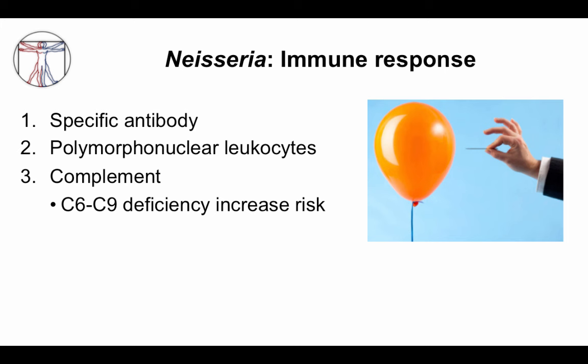The terminal complement pathway can be thought of like a pin used to pop a balloon. The terminal component, particularly C9, is the sharp end of that pin. Without that sharp end, pressing against the bacteria won't work. The terminal complement pathway provides the sharp end to push through the bacterial membrane and kill it.